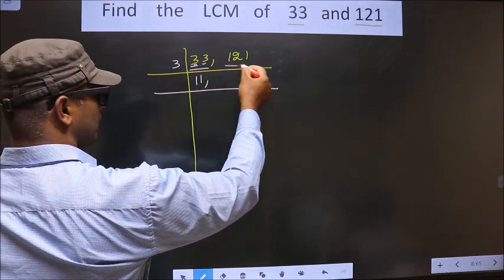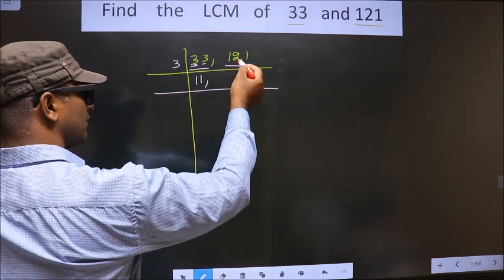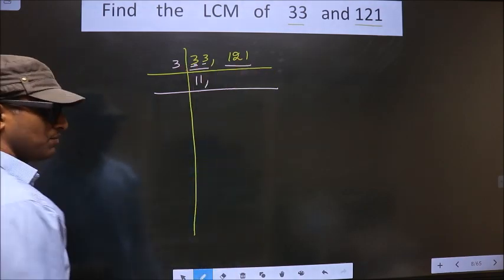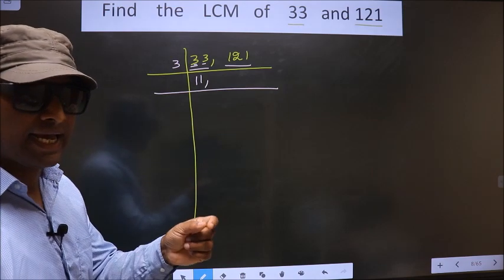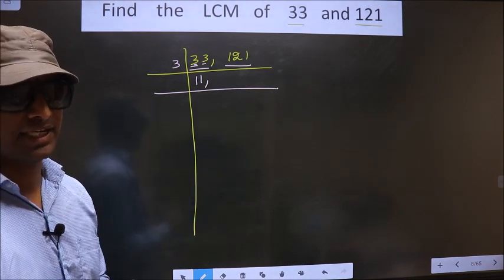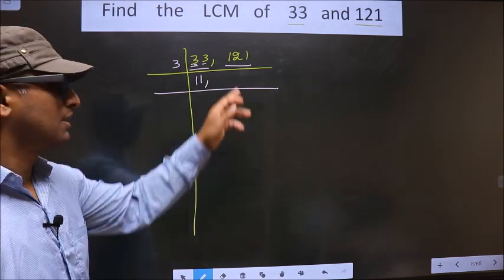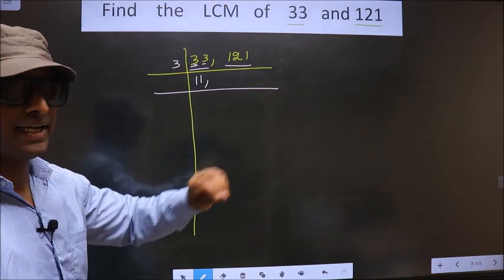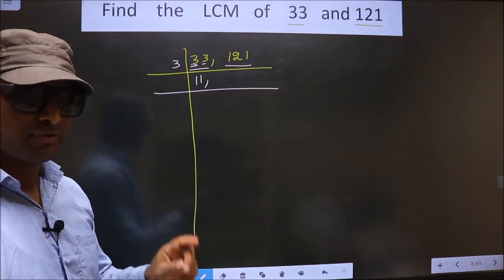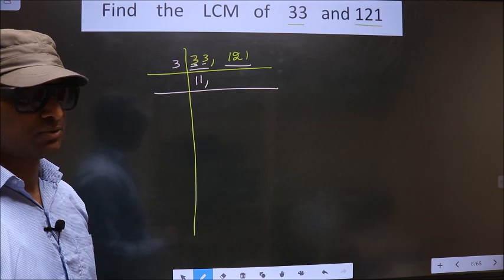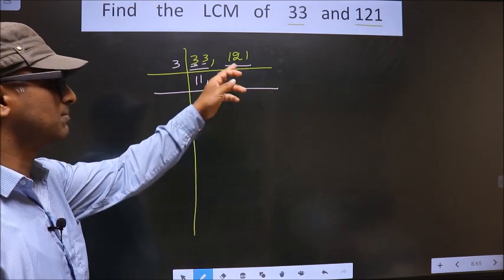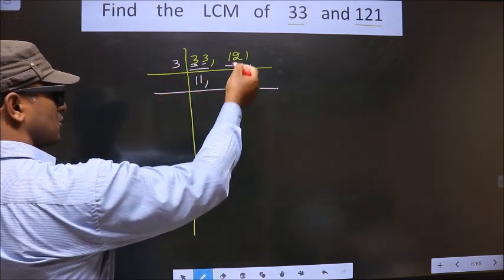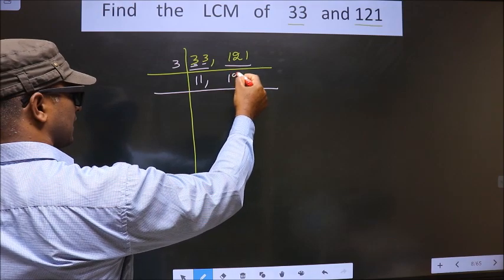The other number is 121. To check whether this is divisible by 3 or not, we add the digits — that is 1 plus 2 plus 1, we get 4. Is 4 divisible by 3? No. So this number is also not divisible by 3, so we write it down as it is.